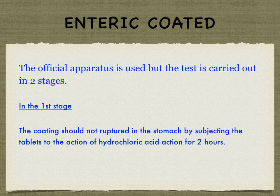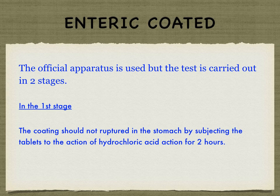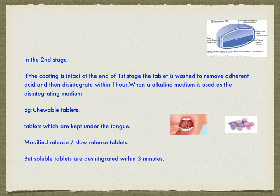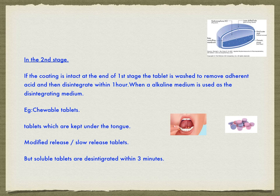The official apparatus is used but the test is carried out in two stages. In the first stage, the coated tablet should not rupture in the stomach; this is tested by subjecting the tablets to the action of hydrochloric acid for two hours. In the second stage, if the coating is intact at the end of the first stage, the tablet is washed to remove adherent acid and then must disintegrate within one hour when an alkaline medium is used as the disintegrating medium.